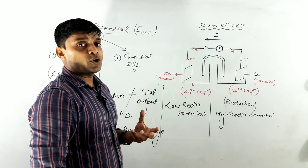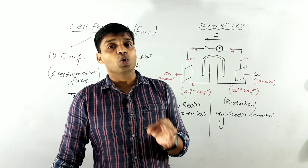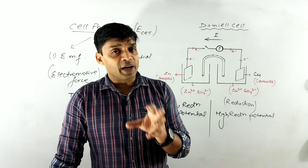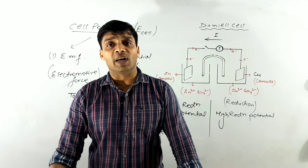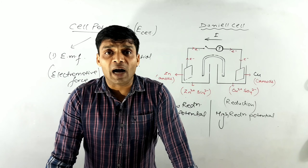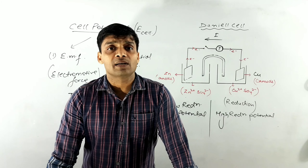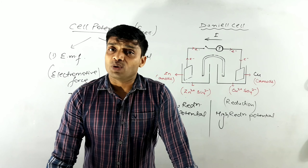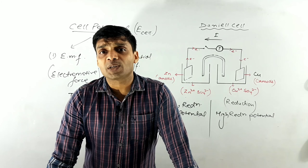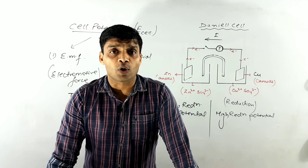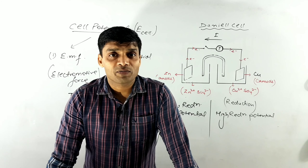So EMF is always greater than potential difference, and we can say: EMF − potential difference = wastage. Whatever wastage occurred due to wire resistance, internal friction, and the voltmeter pointer's movement — that wastage is the difference between EMF and potential difference. This was the concept related to electrode potential and cell potential. These are extremely important concepts for further understanding of electrochemistry. That's it for today's session, and in our next video session we will proceed with more interesting topics. Till then, stay tuned, stay safe — thank you.